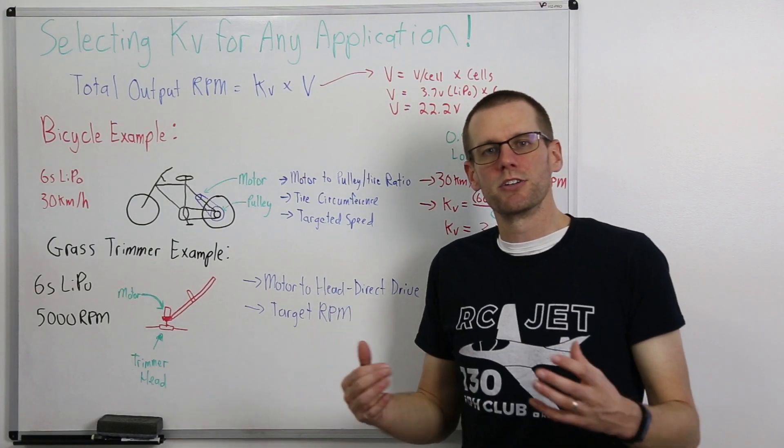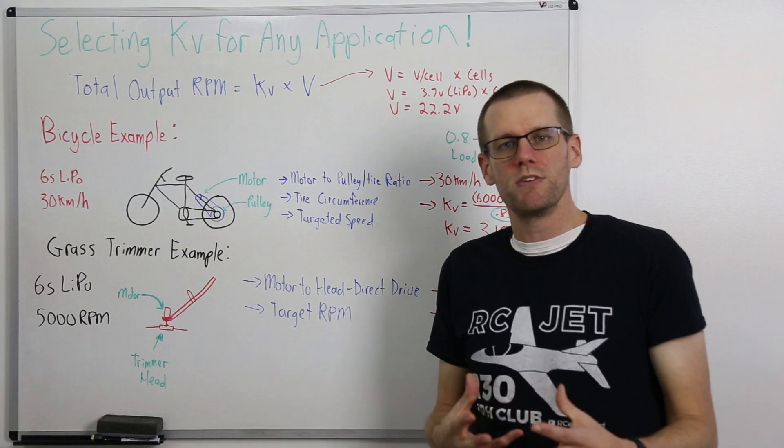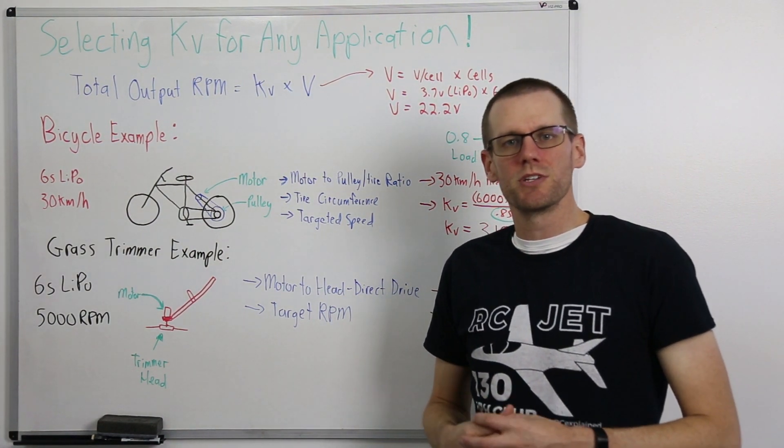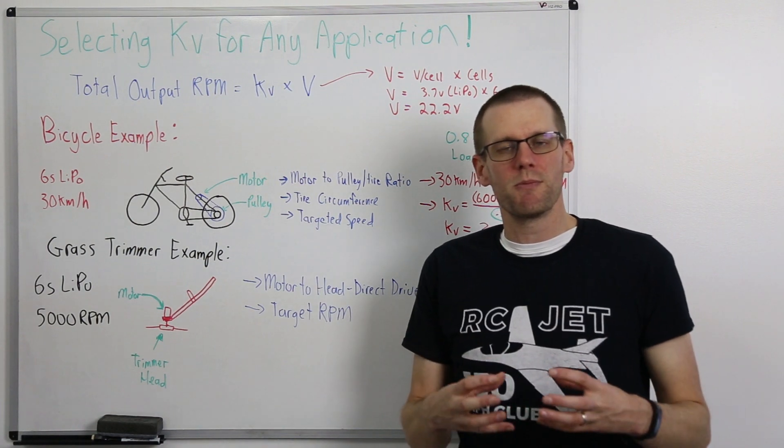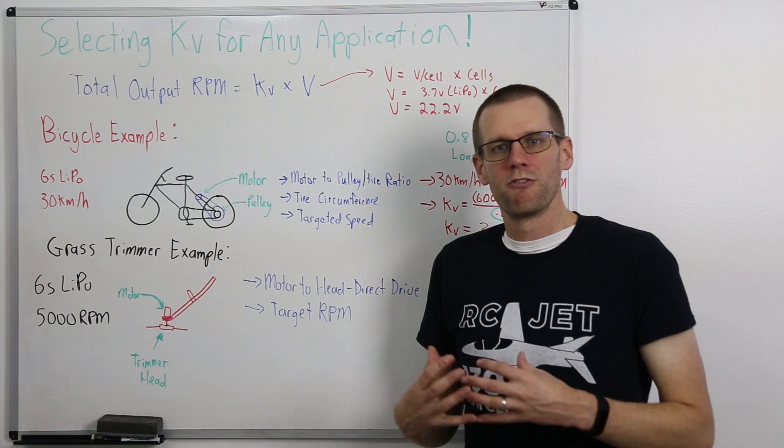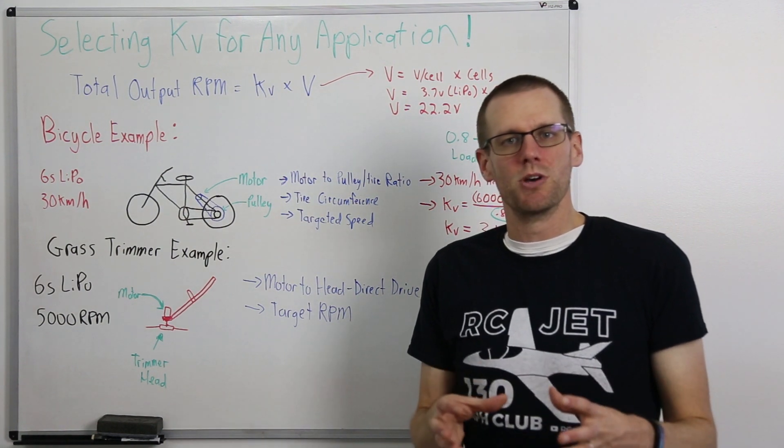Let's head over to the whiteboard so that we can figure this out. Let's start off by understanding exactly what KV means if you don't already know. KV essentially represents the amount of output RPM that we can get from the motor and that is going to be unloaded, which is quite important for every volt that we apply to it.